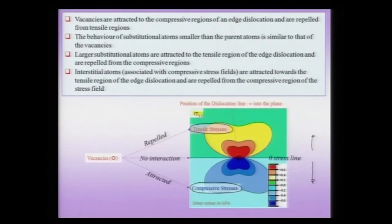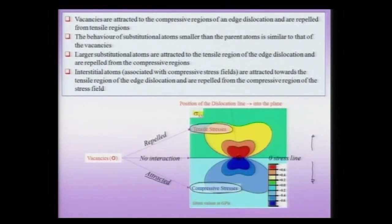What happens to vacancies when they are present near an edge dislocation? Vacancies are also associated with tensile stresses and are therefore attracted to the compressive region of the edge dislocation. Suppose I have a vacancy sitting here — it will tend to move towards the compressive region because there is a gradient in the stresses, and it can lower its energy as it moves towards the core of the dislocation.